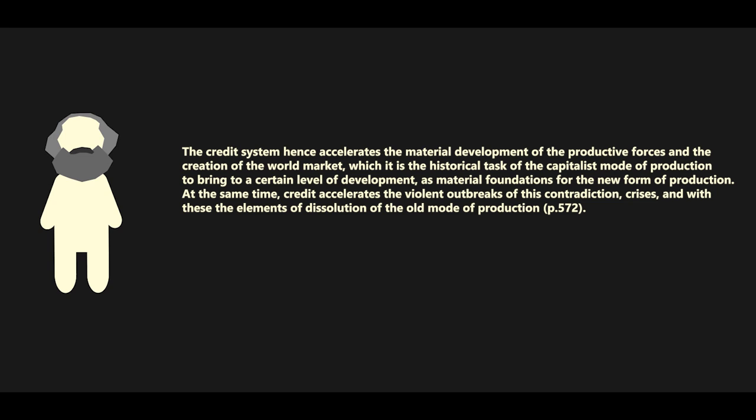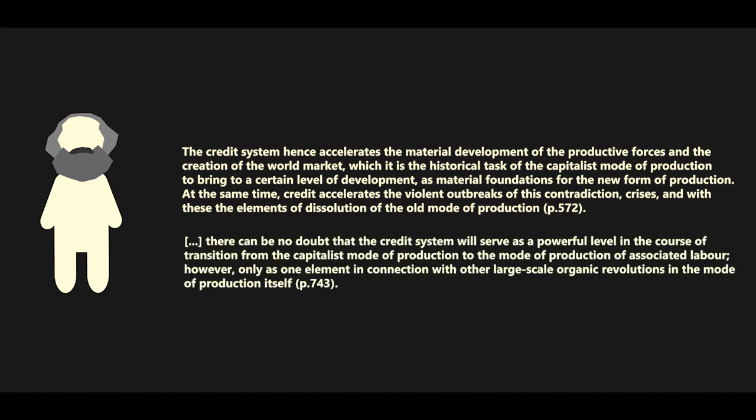Marx was clearly fascinated with the credit system's potential to transform the conditions of capitalism. There can be no doubt that the credit system will serve as a powerful lever in the course of transition from the capitalist mode of production to the mode of production of associated labor, however, only as one element in connection with other large-scale organic revolutions in the mode of production itself. As indicated above, Marx did not attribute a disproportionate weight to credit alone. He persistently described the complexity of transition. He saw similar potential in the banking system, which he argued could contribute to the gradual abolition of private capital by continuously socializing its ownership.